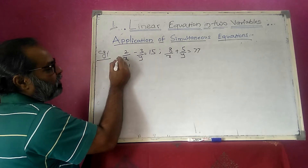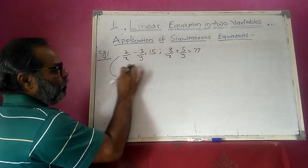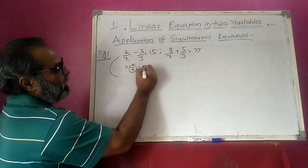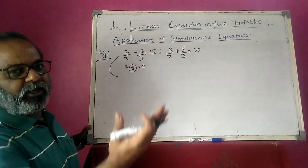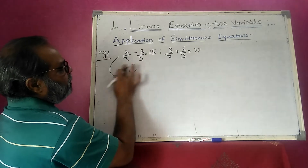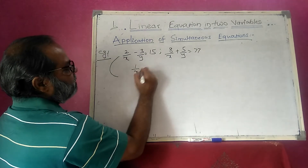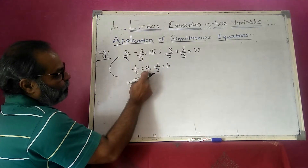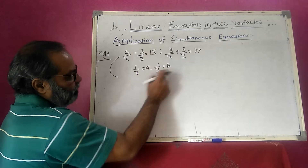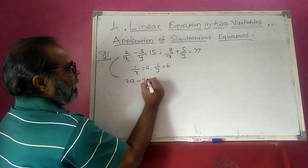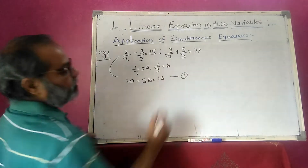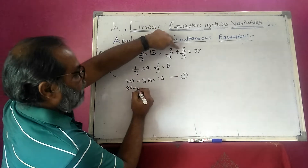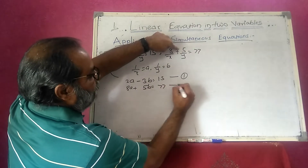We can convert this equation into linear form. Since 2/x means 2 times 1/x, I place 1/x as a and 1/y as b. So in place of 1/x I put a, and in place of 1/y I put b. This equation becomes 2a minus 3b is equal to 15 — this is equation 1. The second equation, 8/x plus 5/y equals 77, becomes 8a plus 5b is equal to 77.